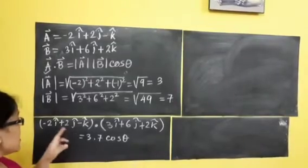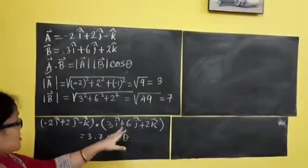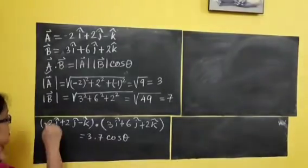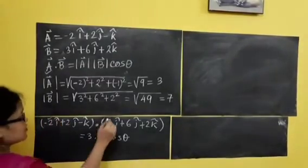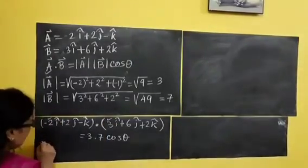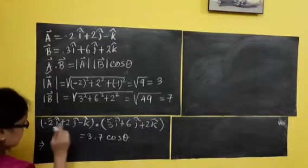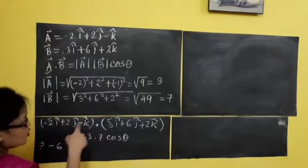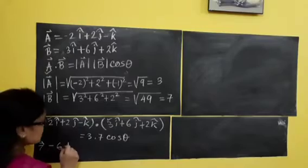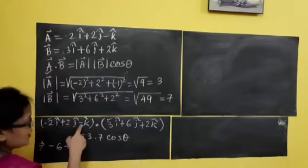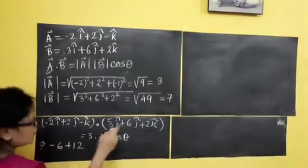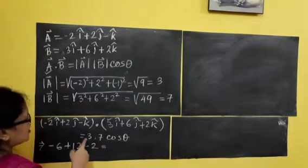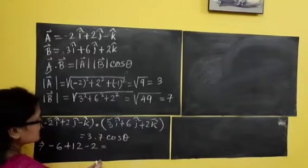It will exist because i-dot-j and j-dot-k will vanish automatically. This will be multiplied with this. So, minus 2 into 3 that is minus 6. 2 into 6 that is plus 12. Minus 1, 2, minus 2 — that is equal to 7.